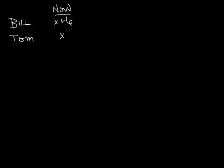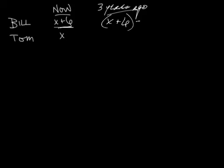Alright, 3 years ago. So in another column, we'll write 3 years ago. 3 years ago, Bill's age was 4 times Tom's age. So how old was Bill 3 years ago? Well, if he's x plus 6 now, 3 years ago he would have been x plus 6 minus 3 years, right? That would have been 3 years ago. And Tom's age 3 years ago would be whatever age he was minus 3.